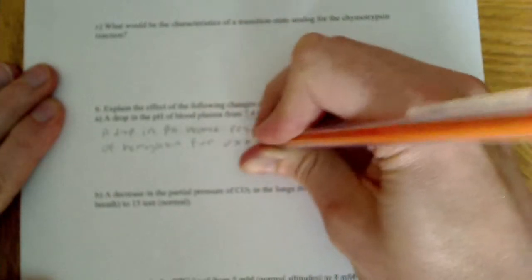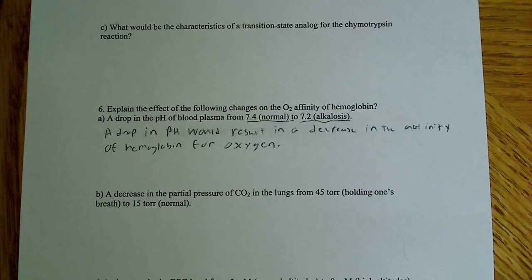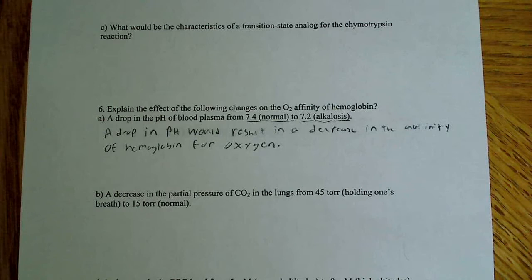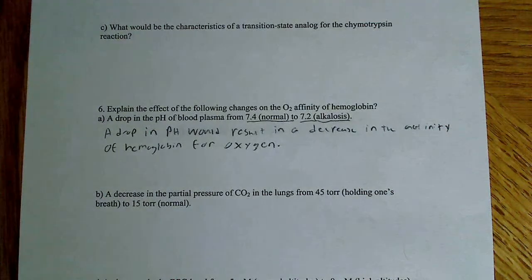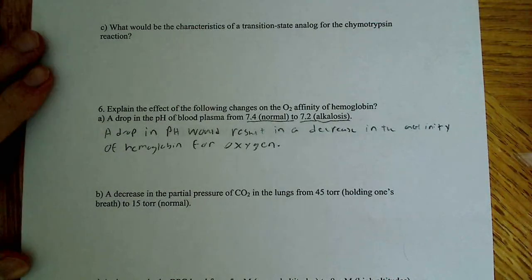This is essentially the Bohr effect. Where we have an increase in protons or hydrogen ions, we have a decrease in O2 affinity. The increase in protons causes the blood plasma to become more acidic — the pH decreases — and as a result it stabilizes the deoxygenated state of hemoglobin. That's due to histidine 146 residue being protonated and forming a salt bridge with an aspartate 94 residue.